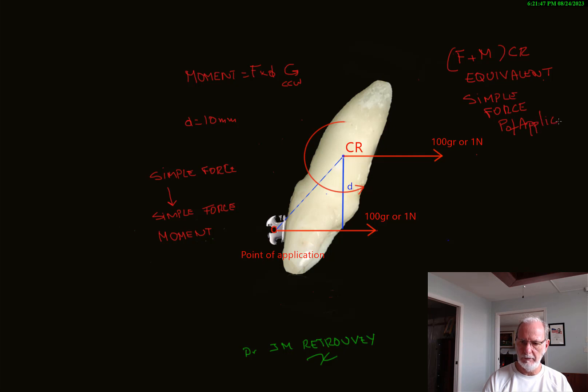So they are not equal. As you can see, they are different. But they have the same effect on the tooth. And obviously, a simple force like this one will result in uncontrolled tipping, a concept we will expose in the next video. Thank you.